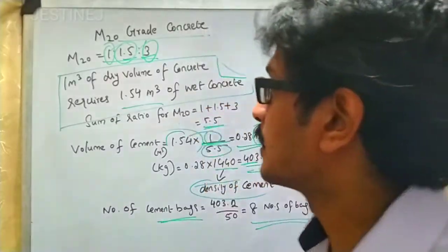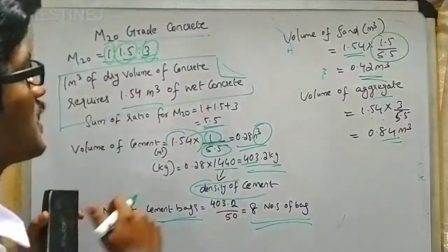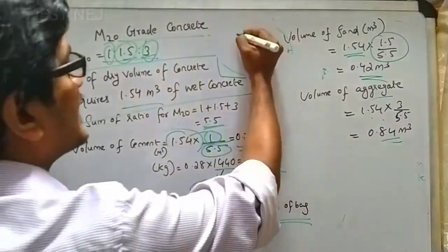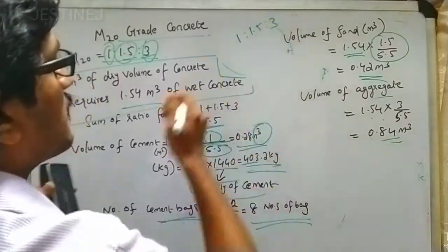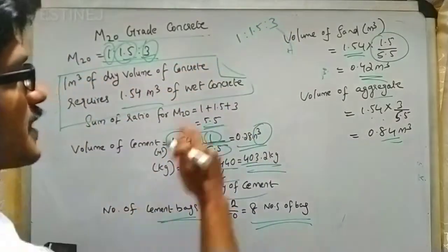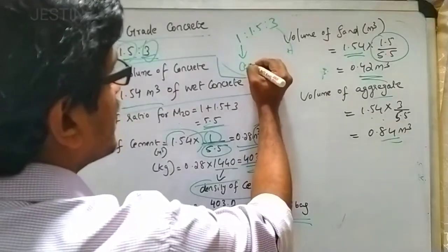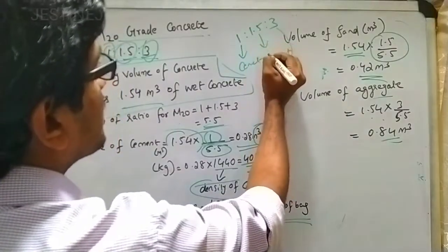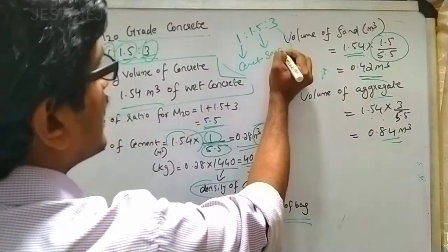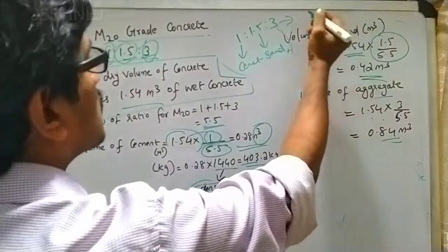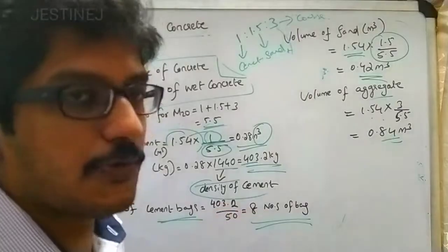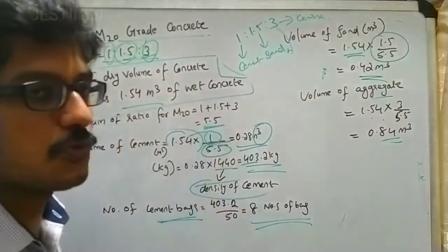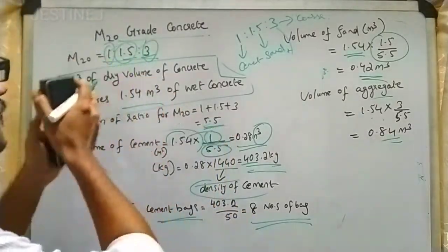So here you know that the M20 grade of concrete is given and its ratio is 1:1.5:3, where 1 represents cement, 1.5 represents sand, and 3 represents coarse aggregate. For other grades of concrete, the ratio will vary, so please refer to those values as well.